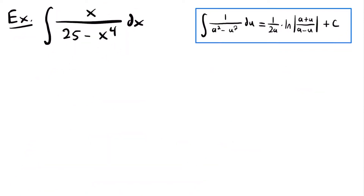So for our next example, we want to solve the integral of x divided by 25 minus x to the fourth power, dx. And so for this integral, we are going to use this integration rule, which is going to correspond to our inverse hyperbolic tangent function and our inverse hyperbolic cotangent function. Again, the answer is written in logarithmic form, but this is an integration rule for those inverse hyperbolic functions. And so we know that the integral of 1 divided by a squared minus u squared du is equal to 1 divided by 2a times the natural log of the absolute value of (a plus u) divided by (a minus u), plus c.